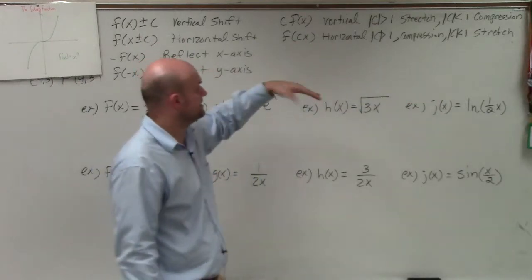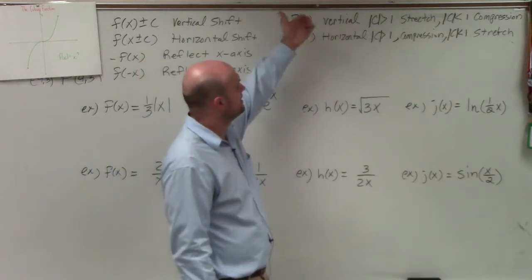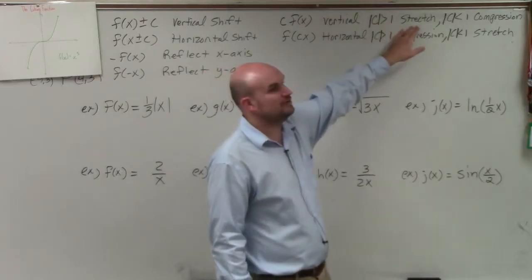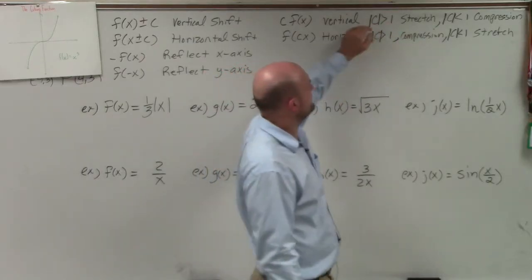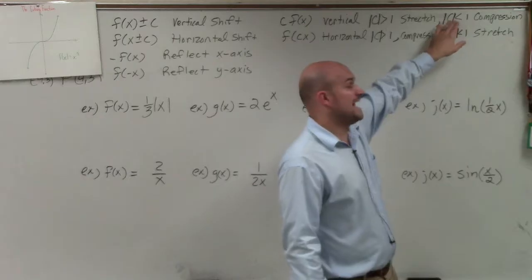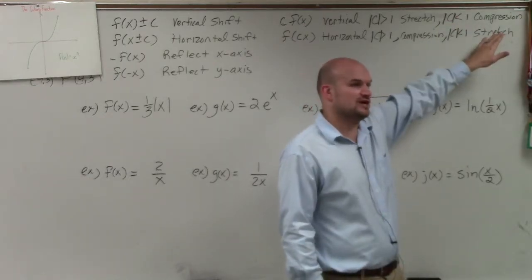Notice how they're kind of the opposite. If you're multiplying by a number outside and that number is greater than 1, it's a vertical stretch. If that number you're multiplying by the outside absolute value is less than 1, it's a vertical compression.